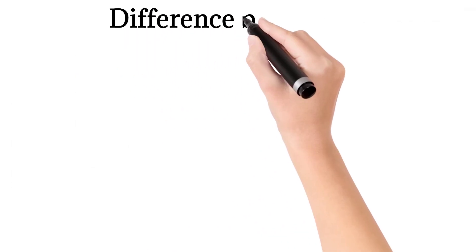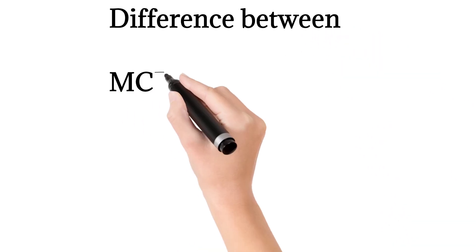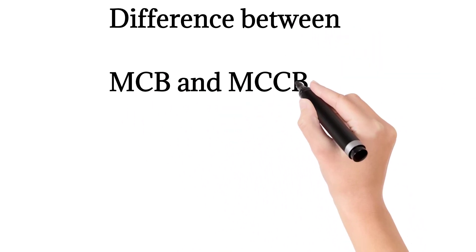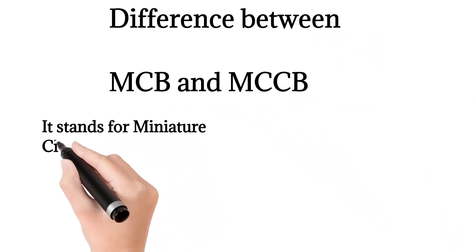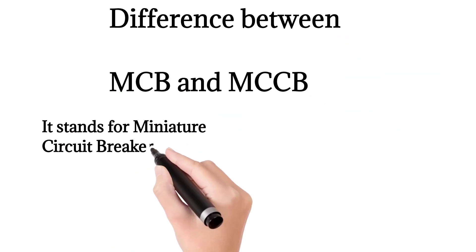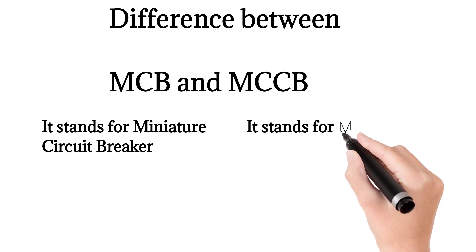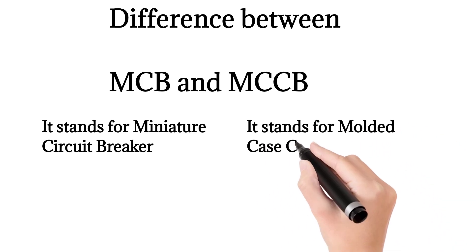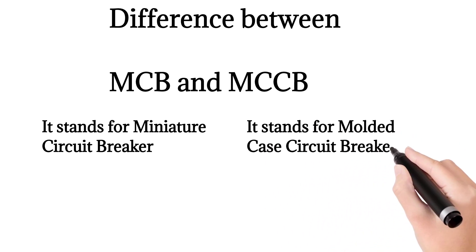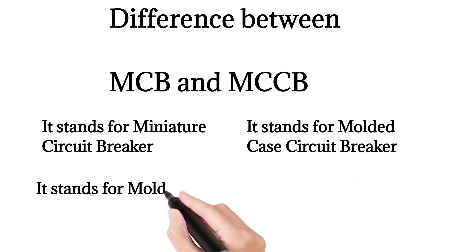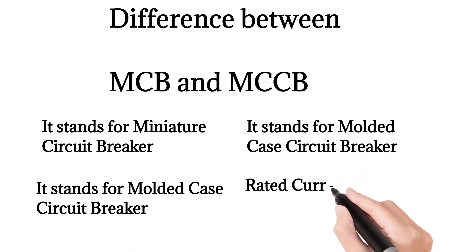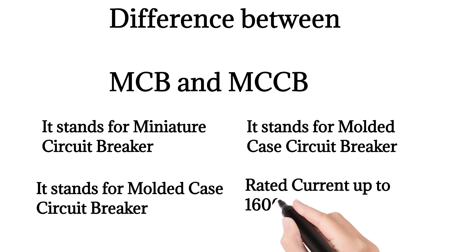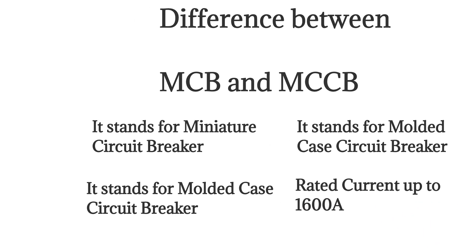Difference between MCB and MCCB: MCB stands for Miniature Circuit Breaker; MCCB stands for Molded Case Circuit Breaker. MCCB has a rated current of up to 1600A.